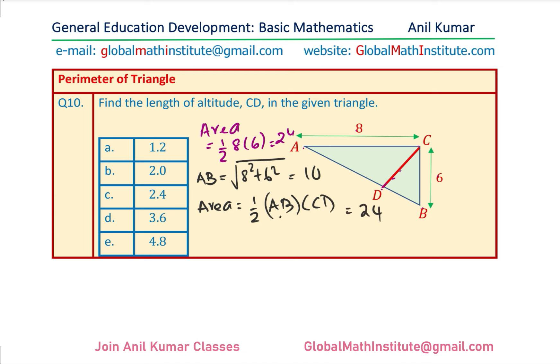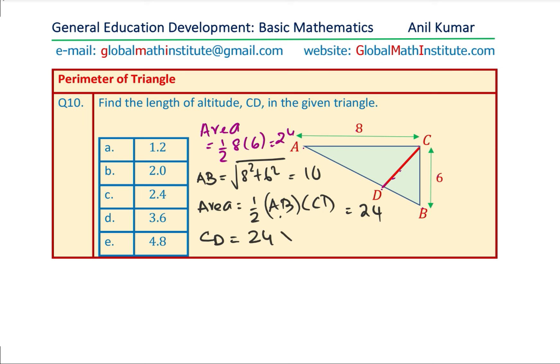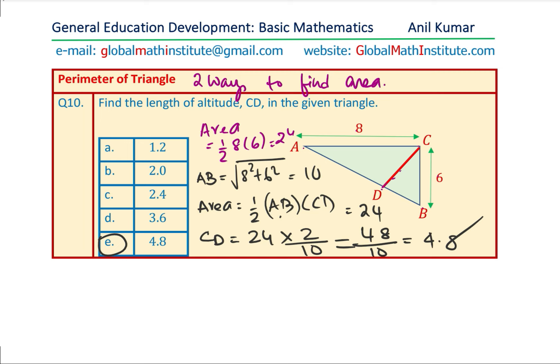Solving for CD: CD = (24 × 2) ÷ 10 = 48 ÷ 10 = 4.8. So 4.8 is the answer — the last option. The method is to find the area in two different ways, which helps solve for the unknown. With this we come to the end of this set of questions based on triangles. I hope the whole concept is clear. We are going to take some challenge questions on these topics next. Thanks for your time and all the best.